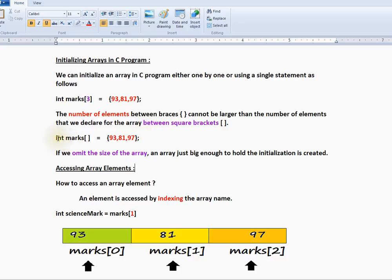You can also initialize like this without giving a number within the square brackets. What will happen is an array just big enough to hold the initialization is created.